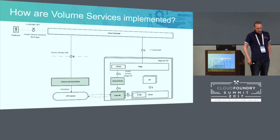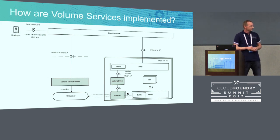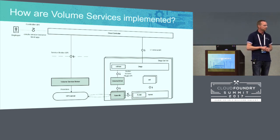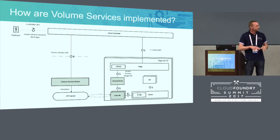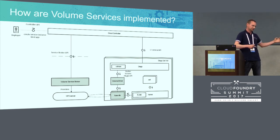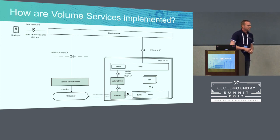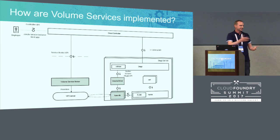The next step is binding the newly created service instance to an application. With that bind call, our service broker returns the VCAP service properties back to the Cloud Controller with all the information about the share location. The Cloud Controller persists that information. In the standard case of services, it would pass the VCAP services environment directly to the application at restart. But for volume services, you can't just start the application — there's no share yet available in the container.